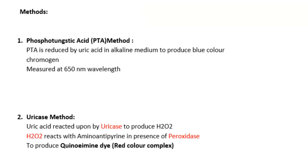There are different methods for uric acid estimation. One is the phosphotungstic acid method, where phosphotungstic acid is reduced by uric acid in an alkaline medium to produce a blue color compound called tungsten blue. It is measured photometrically in a semi-auto or auto-analyser at 650 nm. However, interfering substances may give false positive results, so this method is not most commonly used.